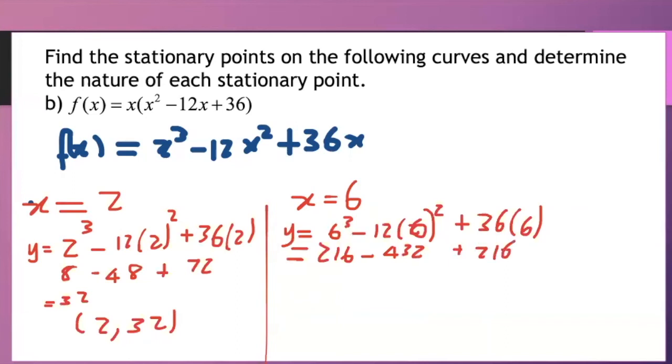So when we add these together we will get 0. So our y value is 0. So x is 6 and y is 0. This is a second stationary point.